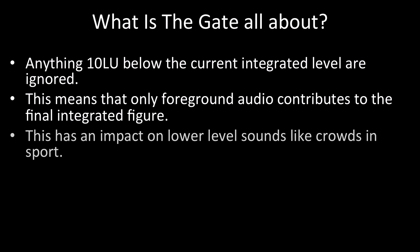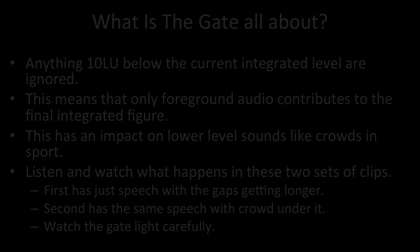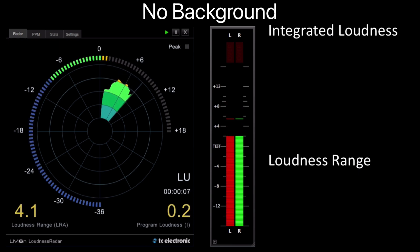To demonstrate this, and also what happens when the background sound is higher, I'm going to play a series of examples where the gaps get longer between the speech clips. Firstly, without any background sounds, watch what happens to the integrated loudness and the loudness range. Then the second set of clips uses the same speech but with background sound set high enough not to trigger the gate — again, watch the integrated and loudness range results. This is an example of where we use bursts of speech with gaps in between to see how the loudness meter changes when we expand the gaps.